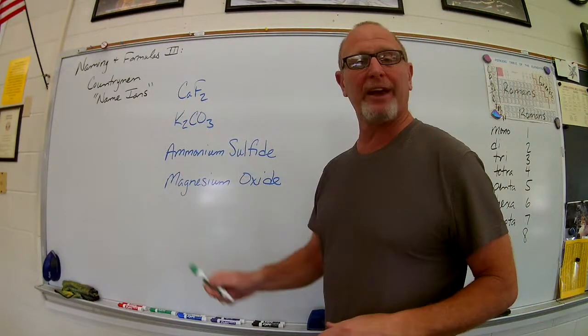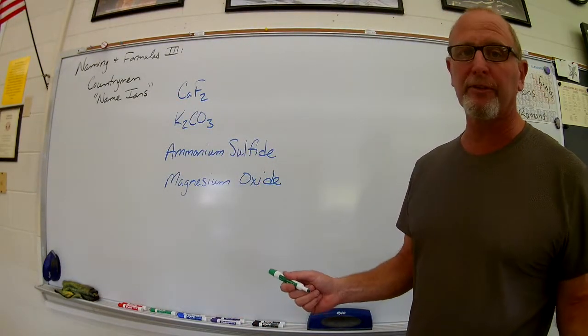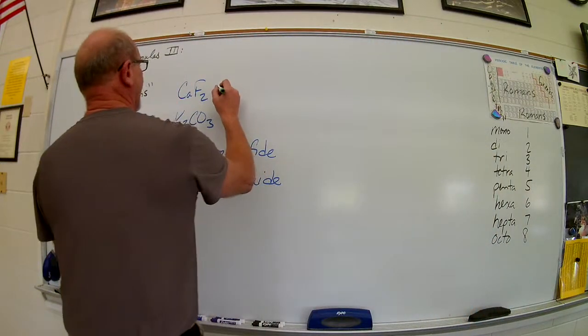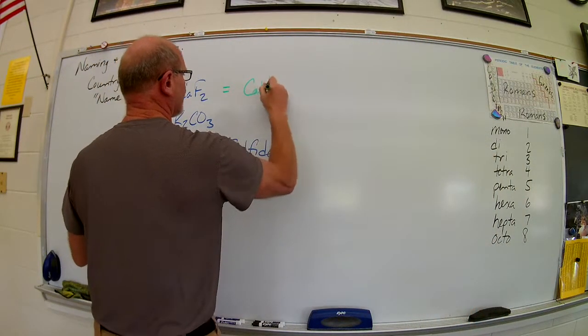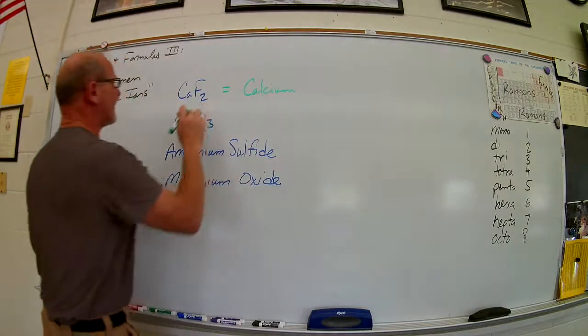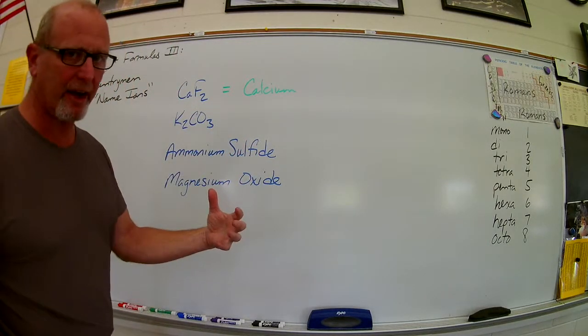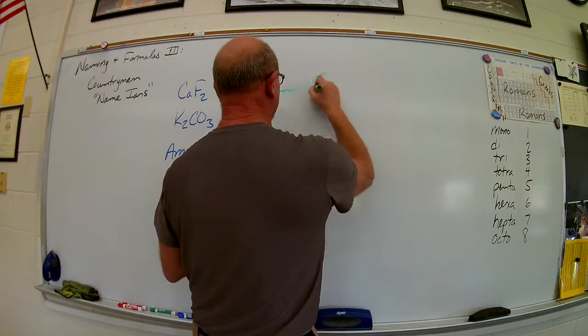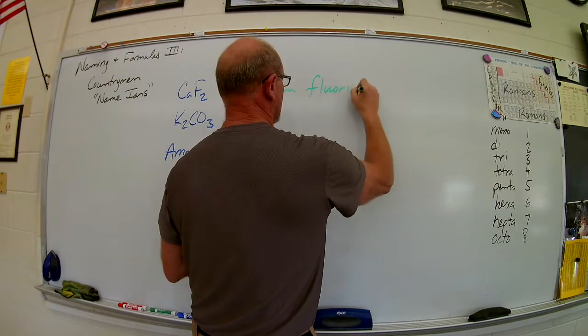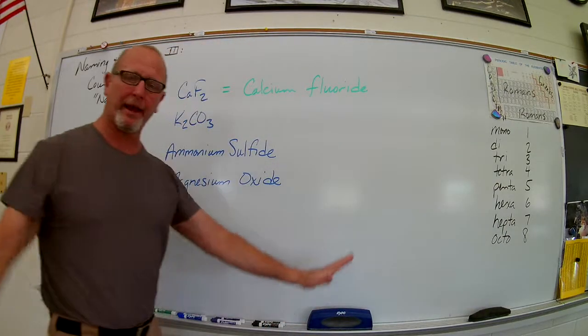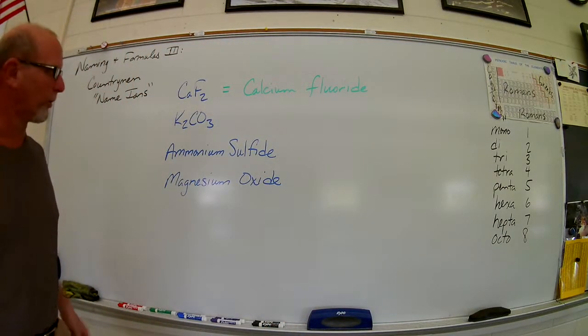So in this case, I've got calcium. Calcium's in the second column, so I'm just going to write that name calcium. Then I'm following that up with fluorine in a compound, monatomic, and ends in IDE. Just write calcium fluoride. Super easy.